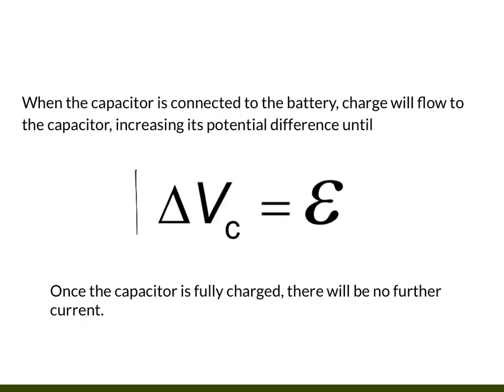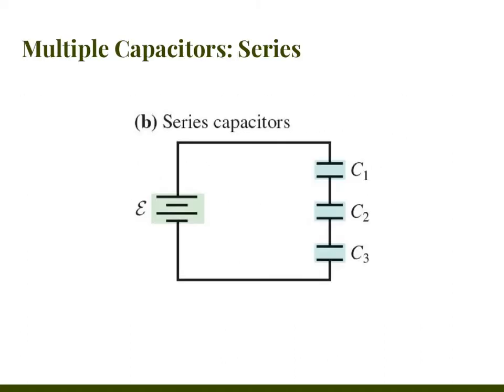The voltage across the capacitor ends up being the EMF of the battery — same thing. Now, capacitors can be joined in circuits in either series or parallel. When you join things in series or parallel, you end up with a different capacitance — an equivalent capacitance for the circuit — very similarly to the way we did resistors. We can take a whole bunch of capacitors, add them up, and get a total capacitance. It is not quite the same as resistors, though — don't assume it is.